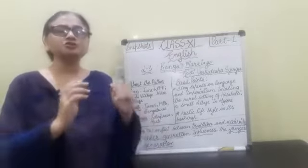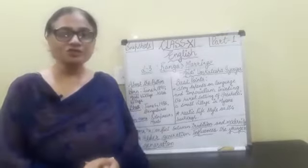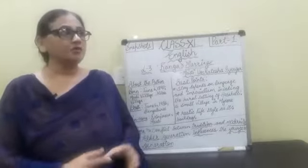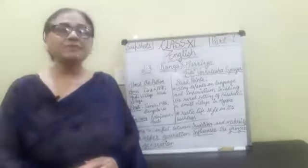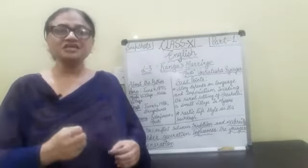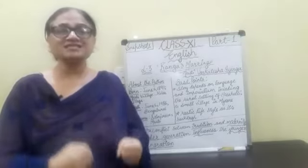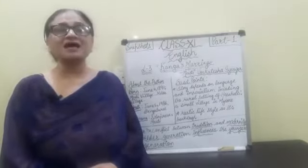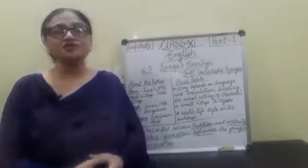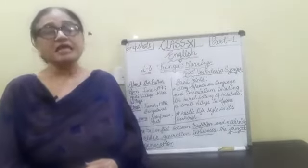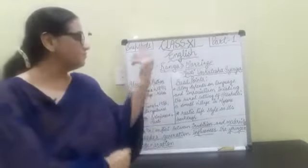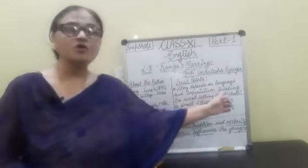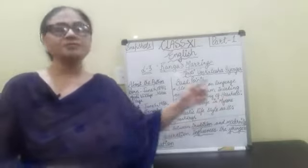This story tells us about two things: the native language and the foreign language. It tells us that we people are not particularly part of one thing, and language is our source — that is our strength. But if we make a foreign language dominant, it means we are giving that language or that country precedence over us. The base point of this story is language and imperialism invading the rural settings of Kusali, a small village in Mysore.